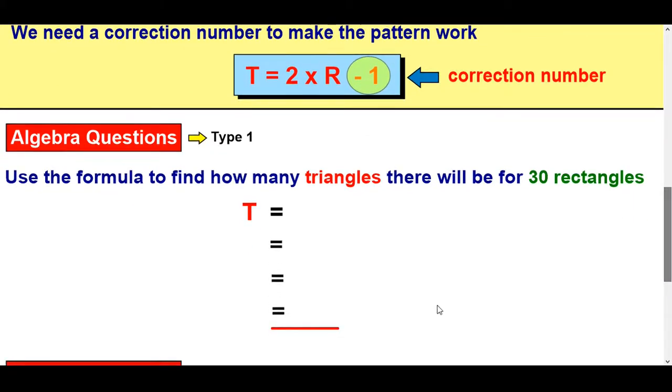Again, what I tend to do is write the formula just as 2R. T equals 2R take away one. I just think it's easier to use when you're doing these kind of things. Right, we'll look at two types of questions again and that'll be the end of the lesson.